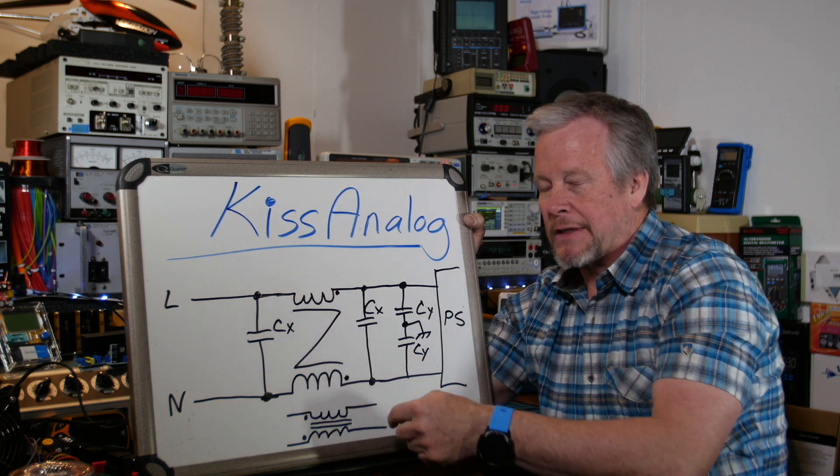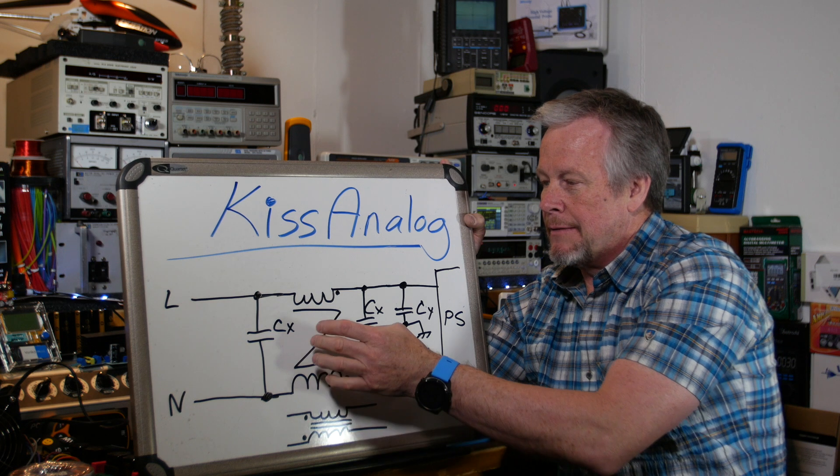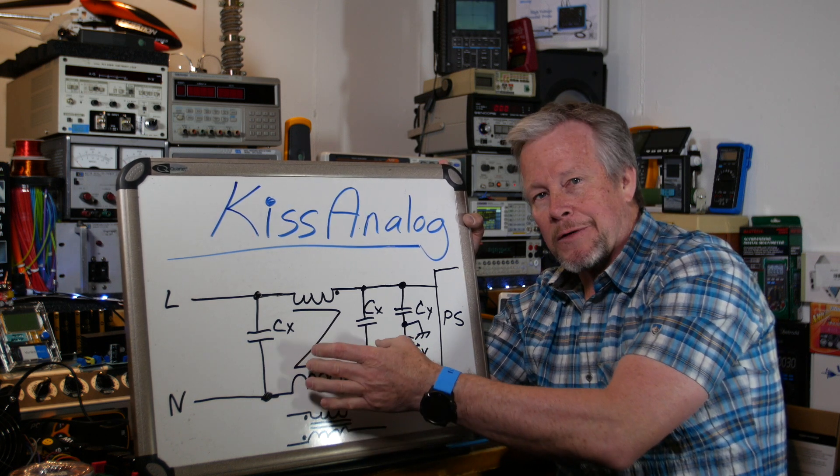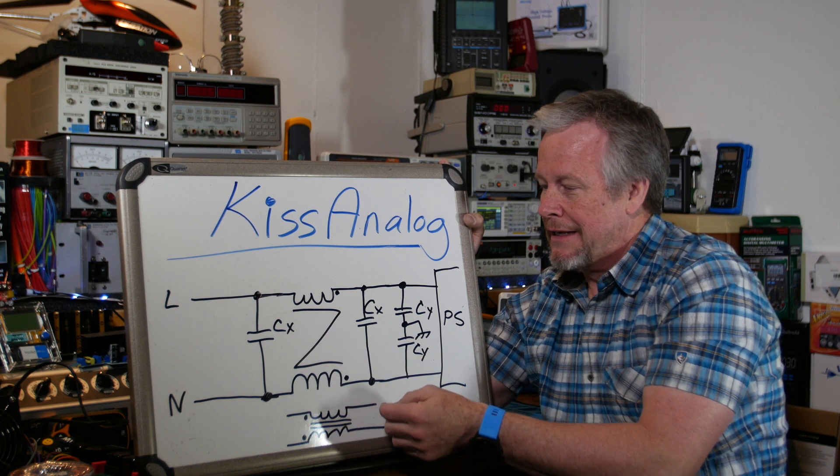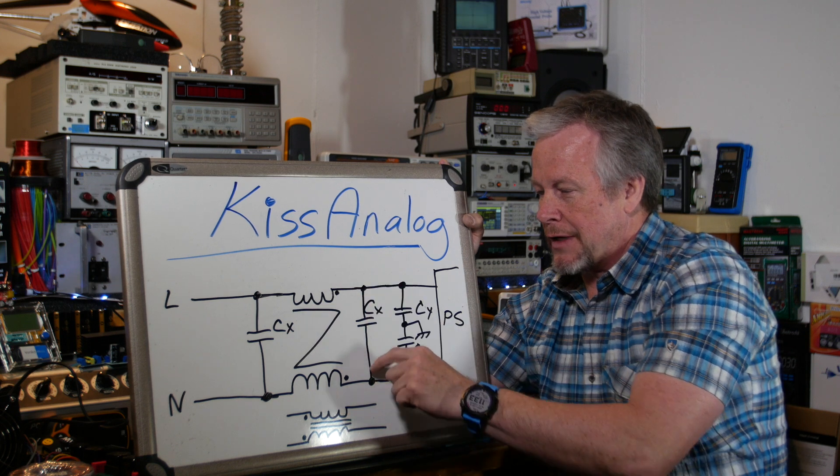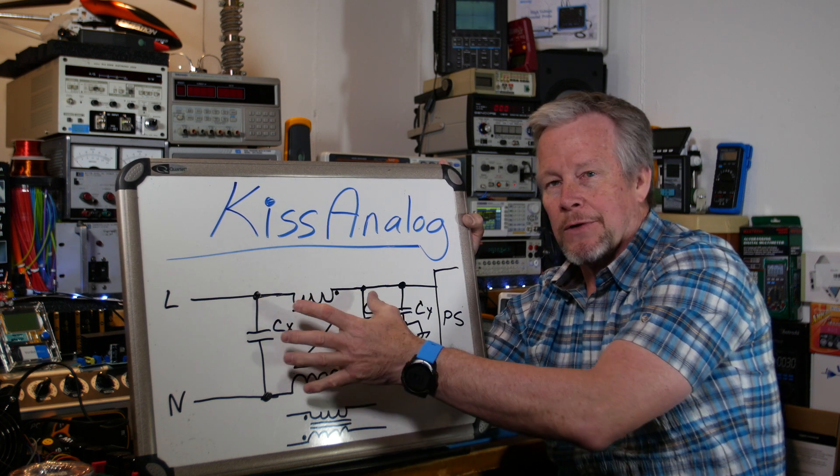But they're not perfect, so you're going to get some leakage inductance, also called differential inductance or normal mode inductance. And these caps are differential because they're across your lines.